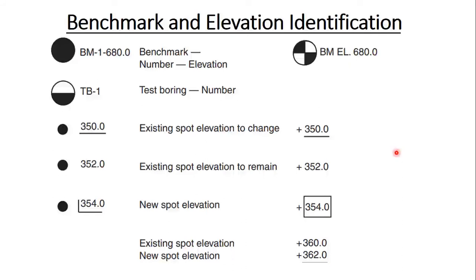Next we have benchmark and elevation identification, which is very important in civil work. A benchmark is shown as a black circle with a code like BM-1-680, where BM stands for benchmark, 1 is the benchmark number, and 680 is the benchmark elevation. Test boring is represented by the symbol TB, for example TB1, TB2, TB3, and so on, where the number indicates the boring number.